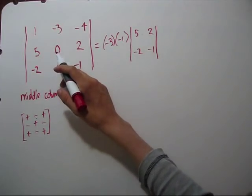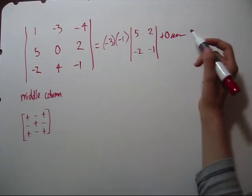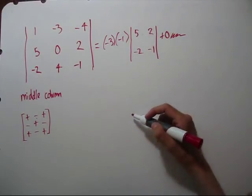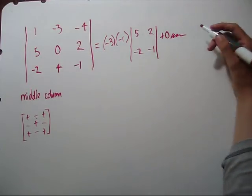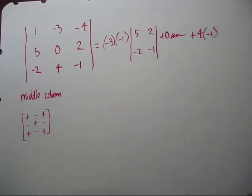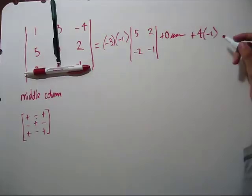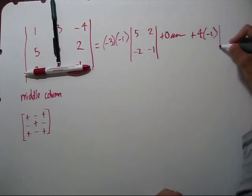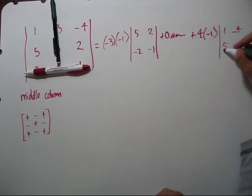The next entry in our column is 0. We'll have 0 times the cofactor, but that'll just be 0, so we don't need to bother to find that. So let's go to the next entry 4, and we're going to have it times negative 1, and then we cross out the row and column containing that 4. So we'll need the determinant of 1, negative 4, 5, and 2.